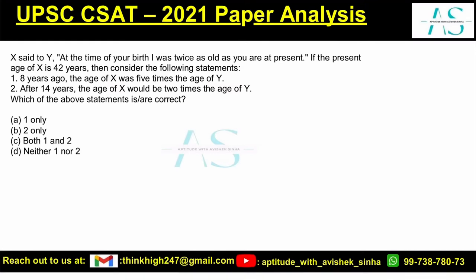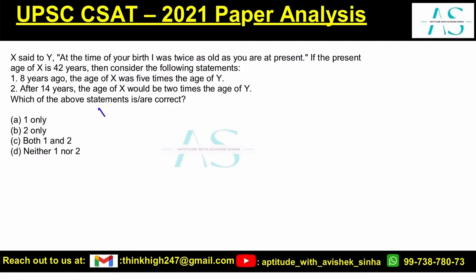X said to Y: 'At the time of your birth, I was twice as old as you are at present.' The present age of X is 42. There are two statements and two people, X and Y. Given data: present age of X is 42. I'm going to write 42 here. For the assumption, I can assume the age of Y to be any variable — I'll use small y for Y, so Y's age is y years.